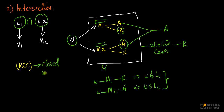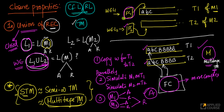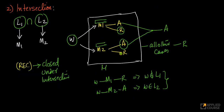Recursive languages are closed under intersection. Once you get the hang of this, in all these arguments the most important thing is to think in terms of the semi-infinite tapes, the ability to simulate machines on individual tapes, and the equivalence of multi-tape to single-tape Turing machines.